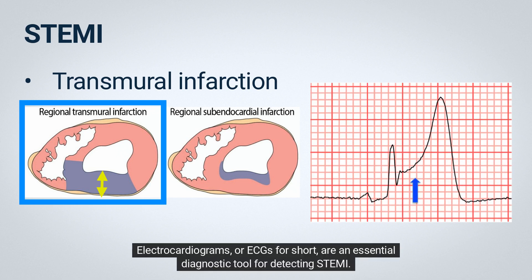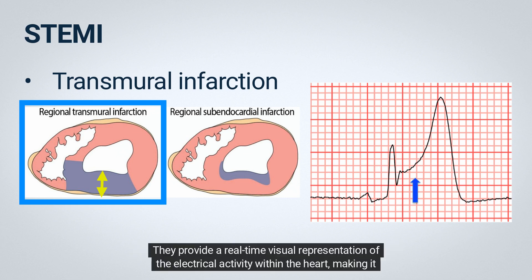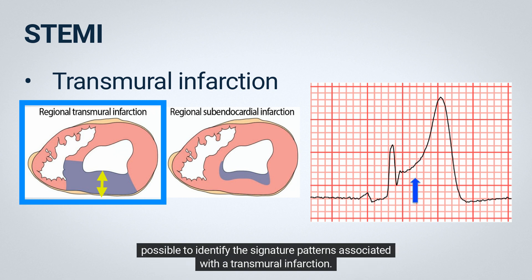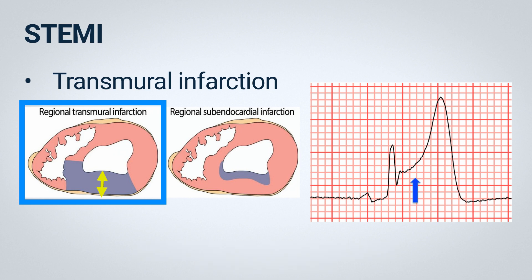Electrocardiograms, or ECG for short, are an essential diagnostic tool for detecting STEMI. They provide a real-time visual representation of the electrical activity within the heart, making it possible to identify the signature patterns associated with a transmural infarction.